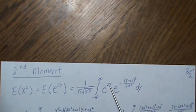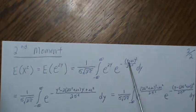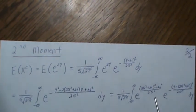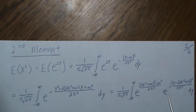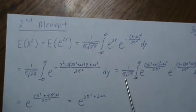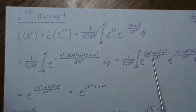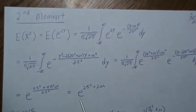And we're going to do the same technique, we're going to combine the exponents, collect, expand that, collect like terms, complete the square, which is what this is. And these are constants, so we can move them out front, this becomes a normal distribution, leaving just this constant out front, simplify it, we get this. So that's the second moment.